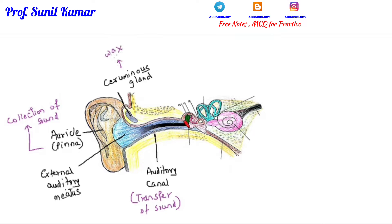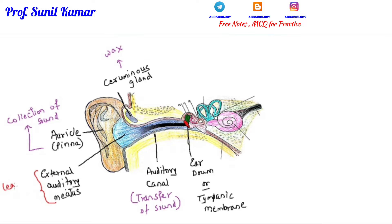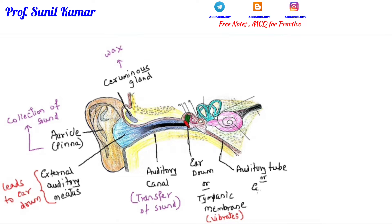The ceruminous gland produces wax, and wax helps in trapping the dirt present in the air. Moving further inward, we have the tympanic membrane, also called the eardrum. Whenever sound hits the tympanic membrane, it vibrates, and that vibration generates an impulse. The intensity of vibration depends upon the decibel of the sound.